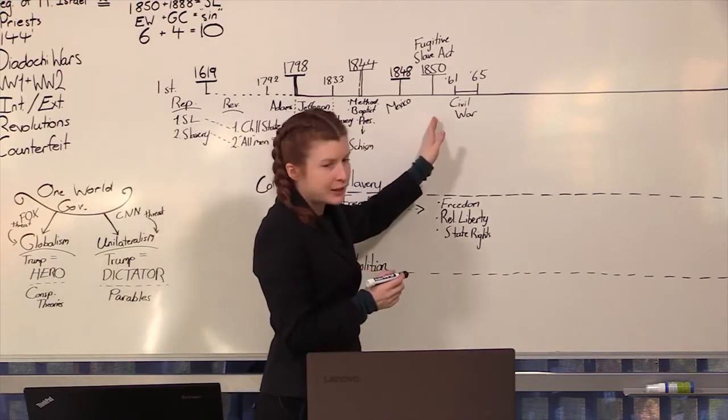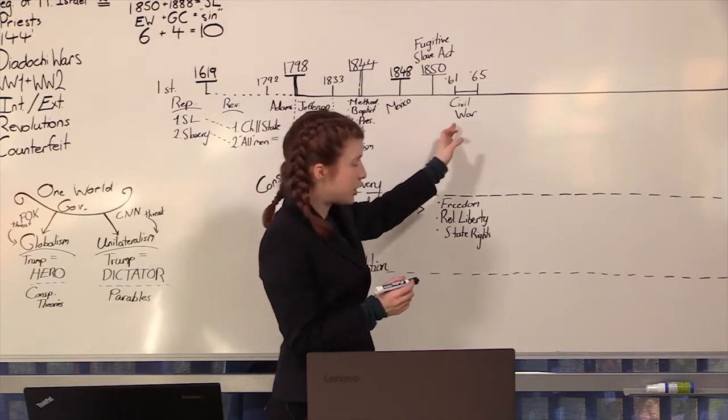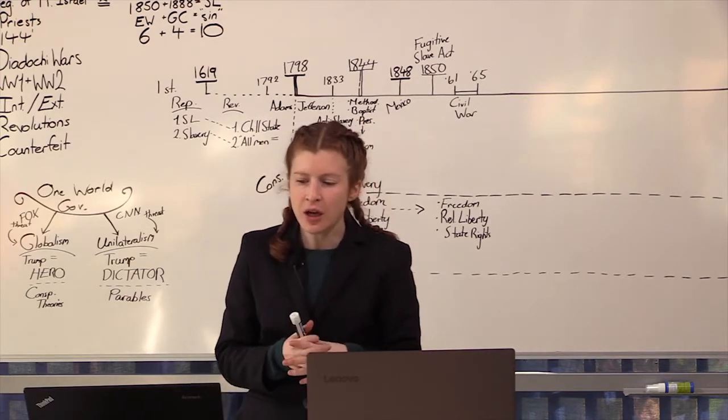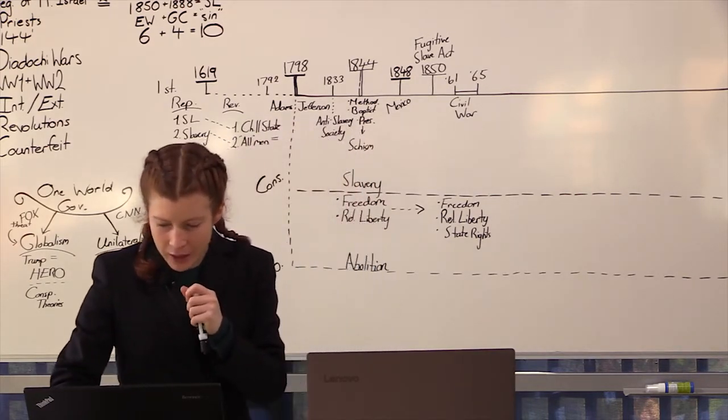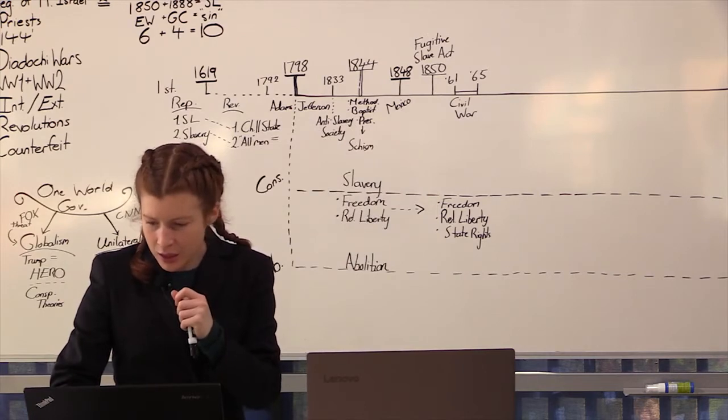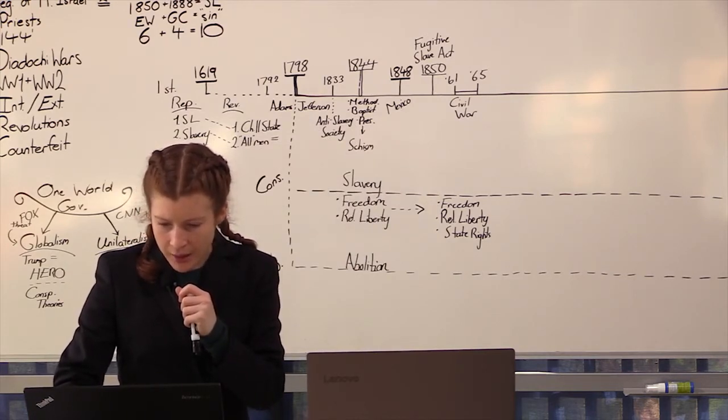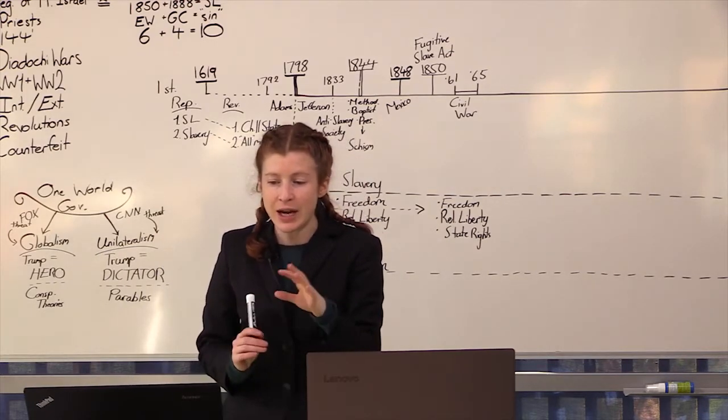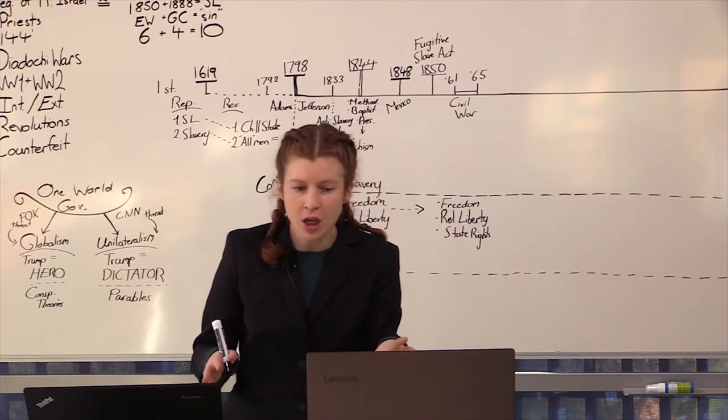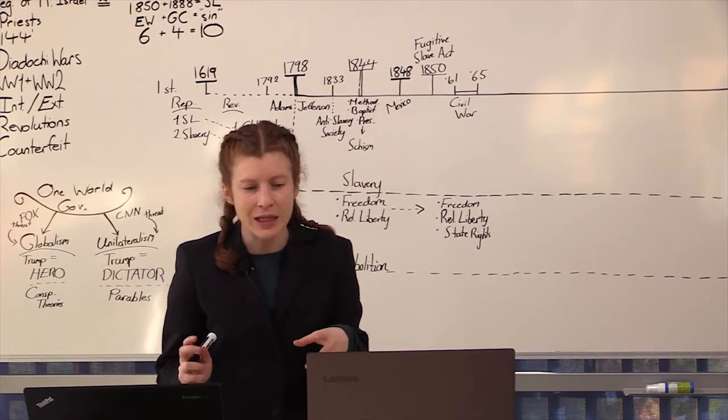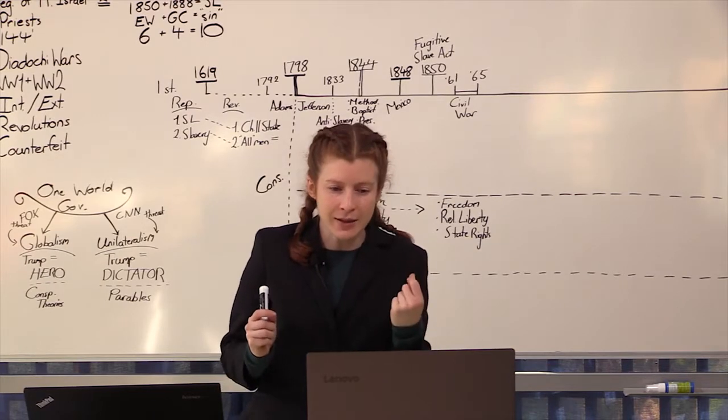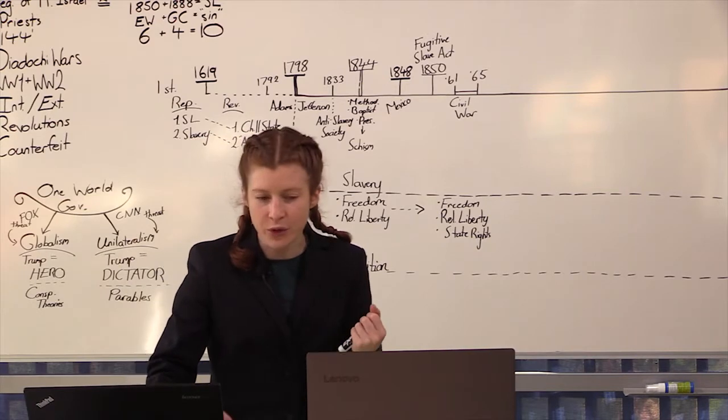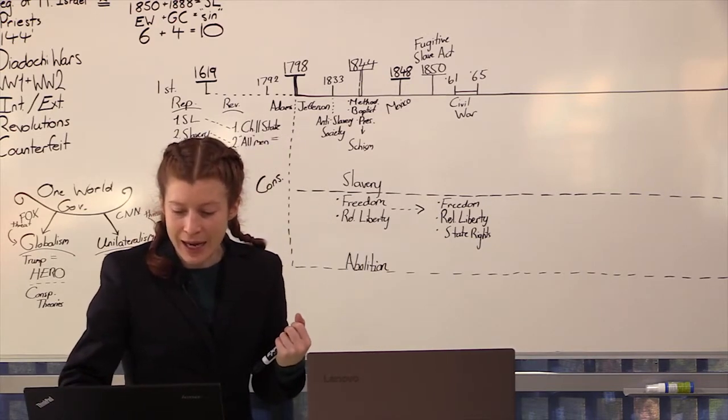We went to 1850, the Fugitive Slave Act, then to the Civil War, and we read the statements of secession from four key states: Texas, Mississippi, Georgia, and South Carolina. We read a fair bit of South Carolina and saw how they defended their rights as a state to have independent government, and how they saw the North was now violating that right.